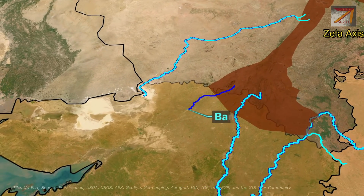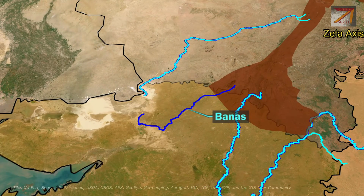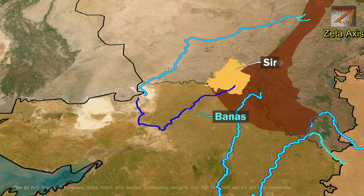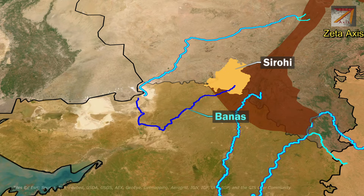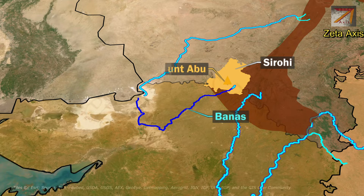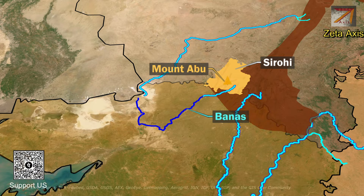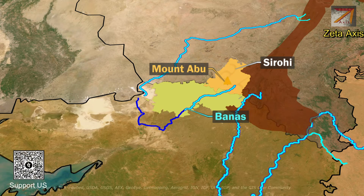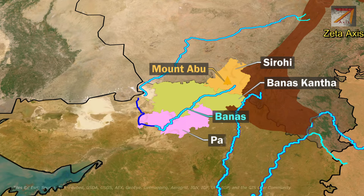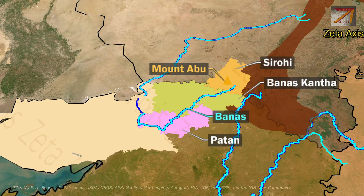The next important river is Banas River. Banas River originates from the southern Aravalli range in Sirohi district of Rajasthan. It flows south, draining the valley west of Mount Abu. It continues south through the plains of Gujarat, flowing through Banaskantha and Patan districts to drain into the Little Rann of Kutch.